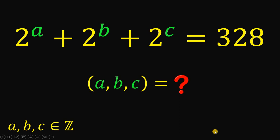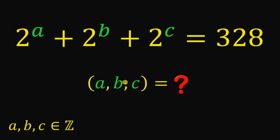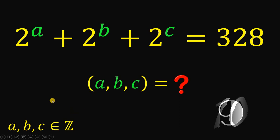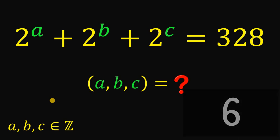Can you solve this math challenge? Here's the question: solve for the values of A, B, and C, given that 2 raised to A plus 2 raised to B plus 2 raised to C equals 328, wherein A, B, and C are all integers. You can pause this video if you want to give this problem a try.